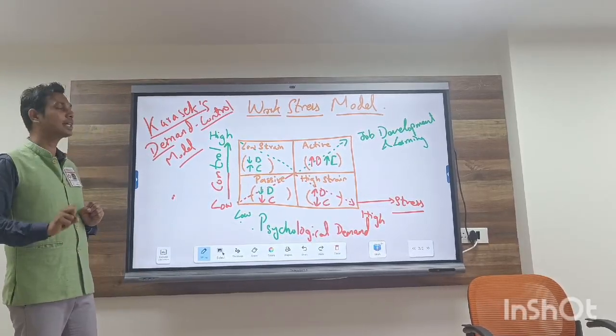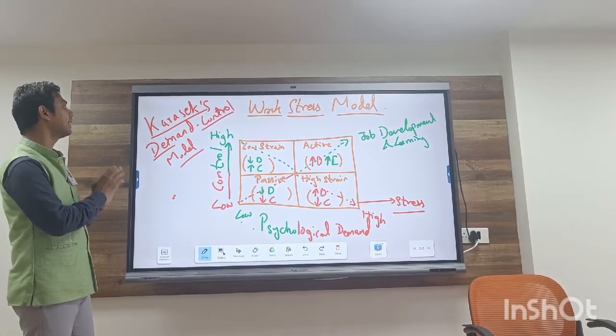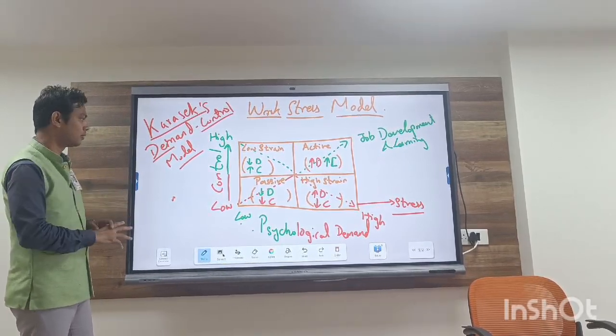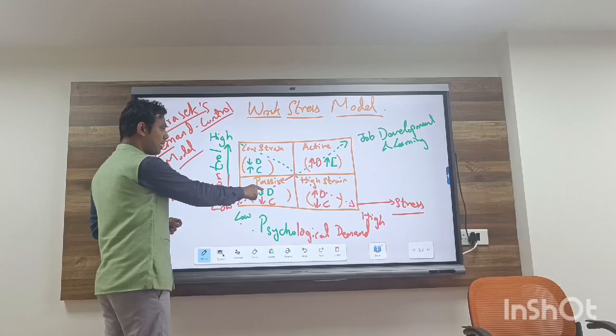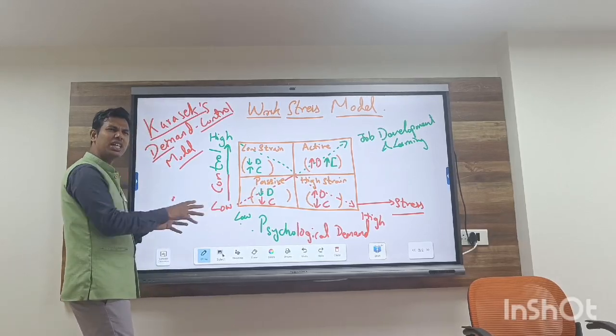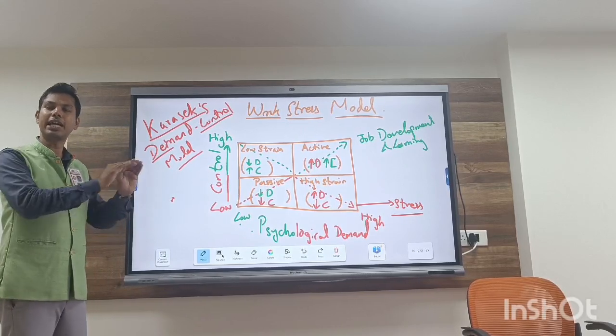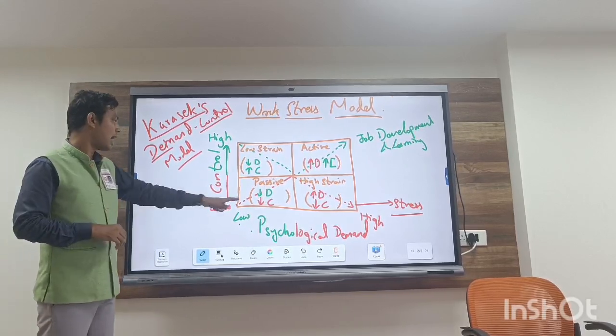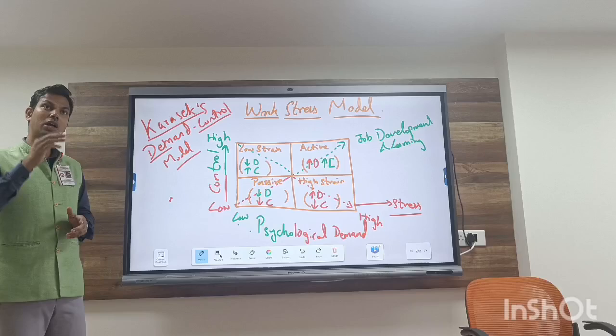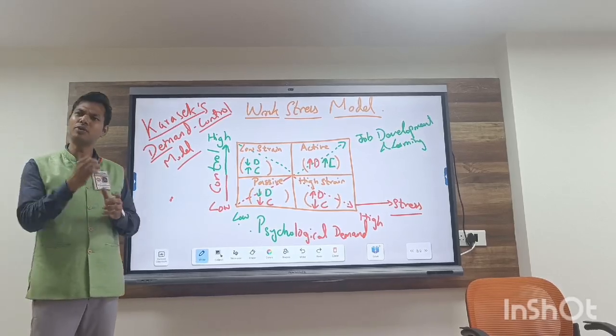Now moving to the last two tasks said by Karasek, under his model, demand control model. When the psychological demand of the situation is less, stressful situation, psychological demand is less, and the control that you have on the work is also less.